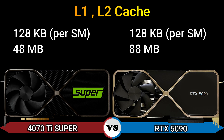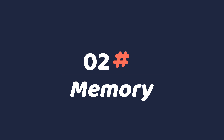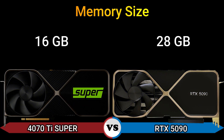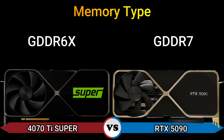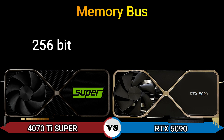L2 cache: 128 KB per SM, 48 MB and 128 KB per SM, 88 MB. Memory size: 16 GB and 28 GB. Memory type: GDDR6X and GDDR7. Memory bus: 256-bit and 448-bit.